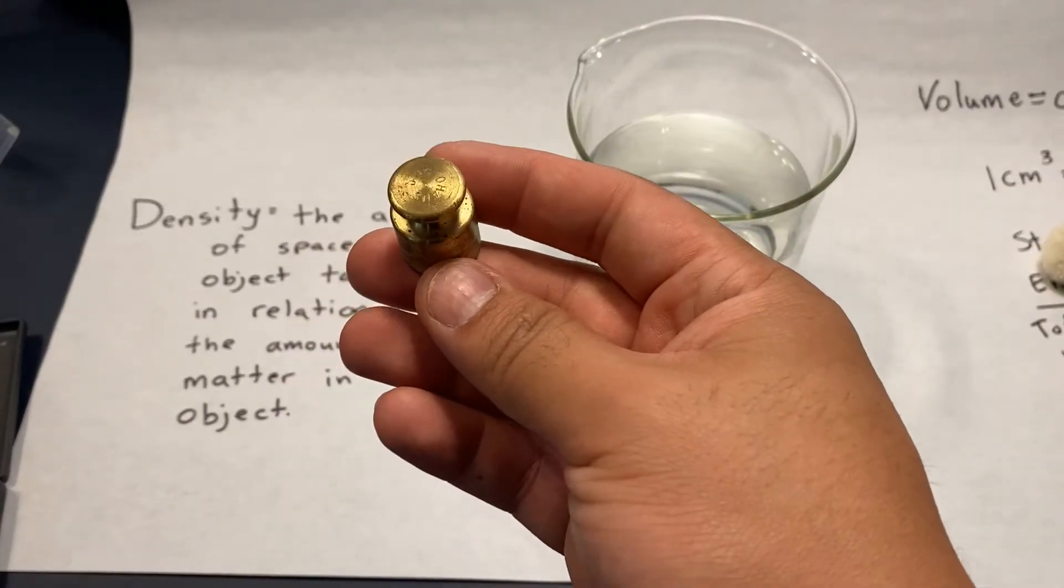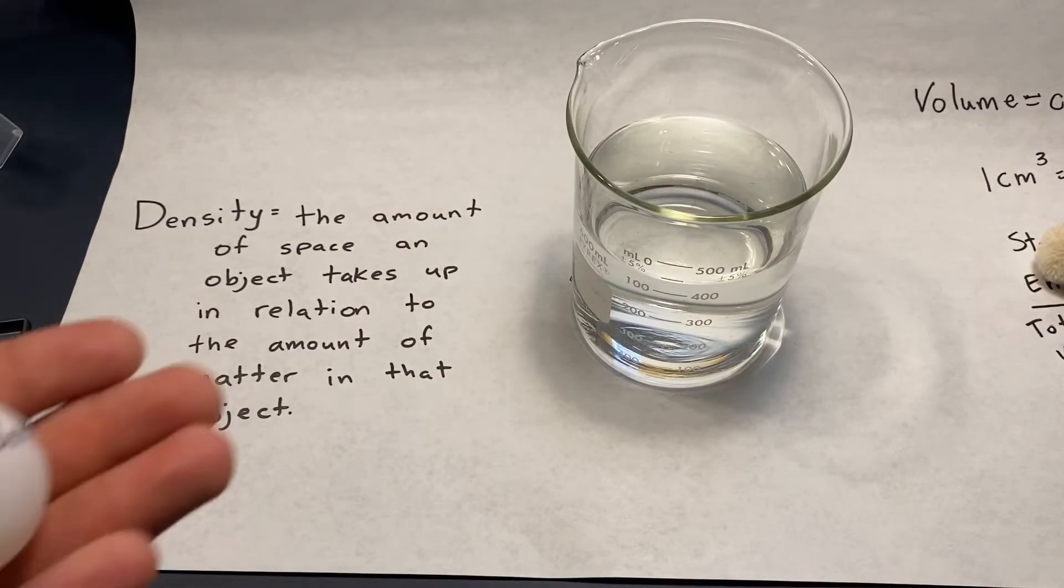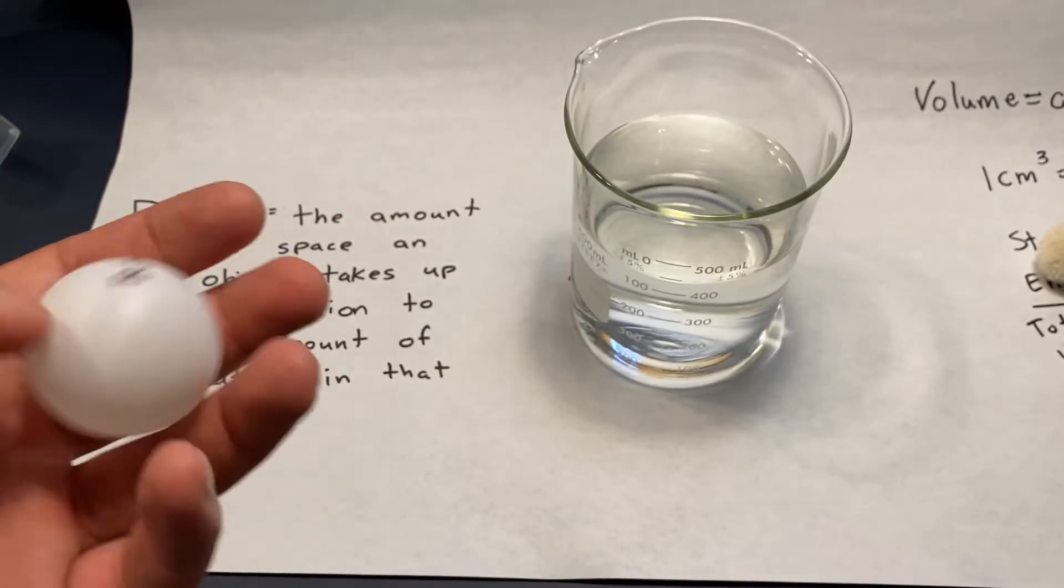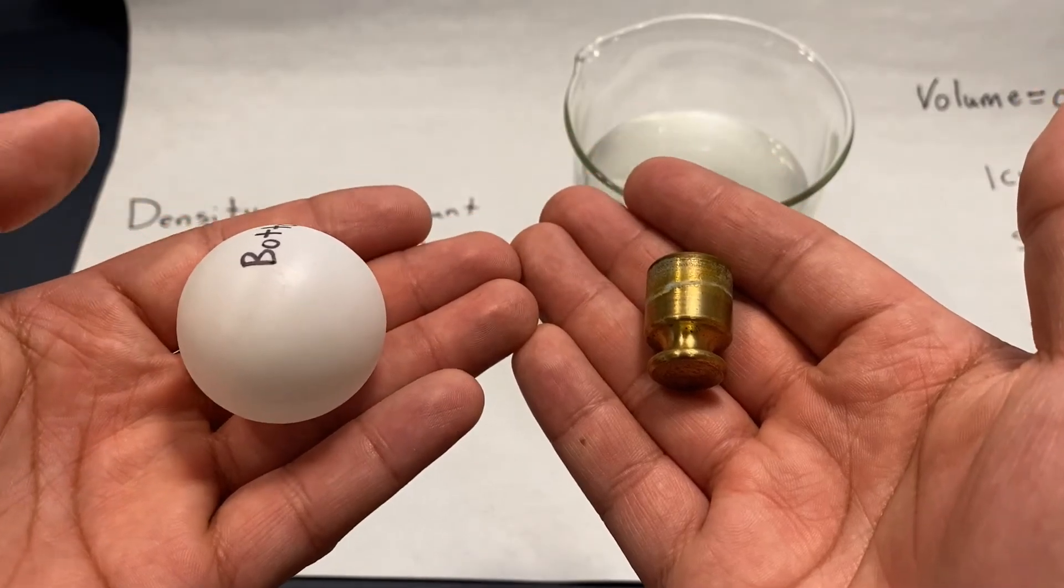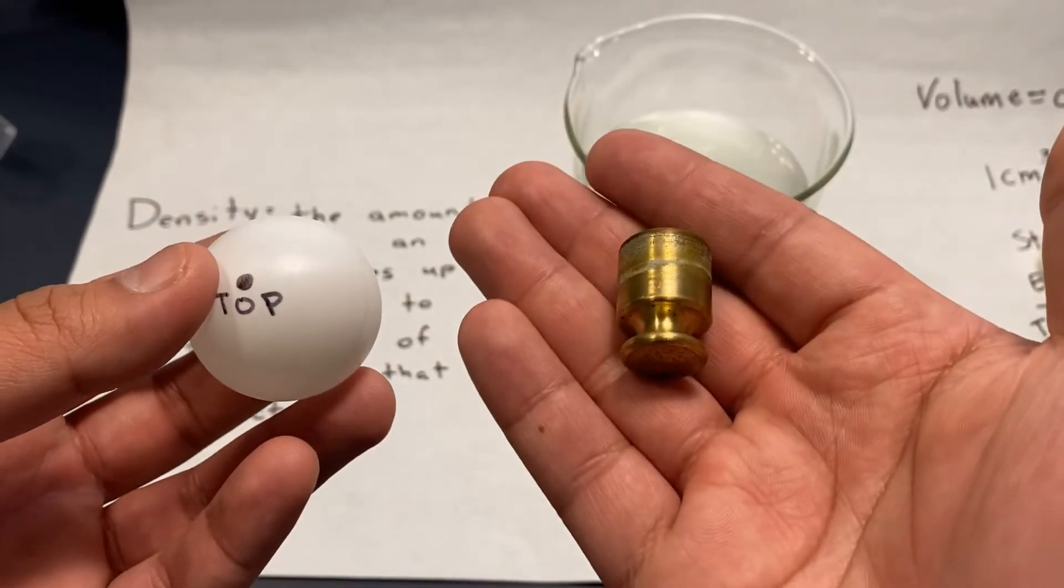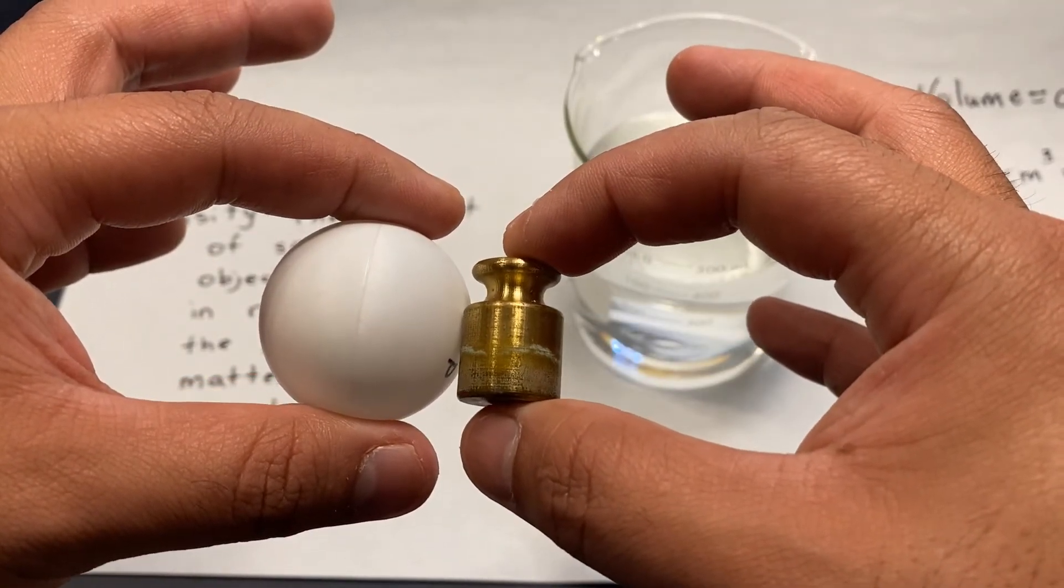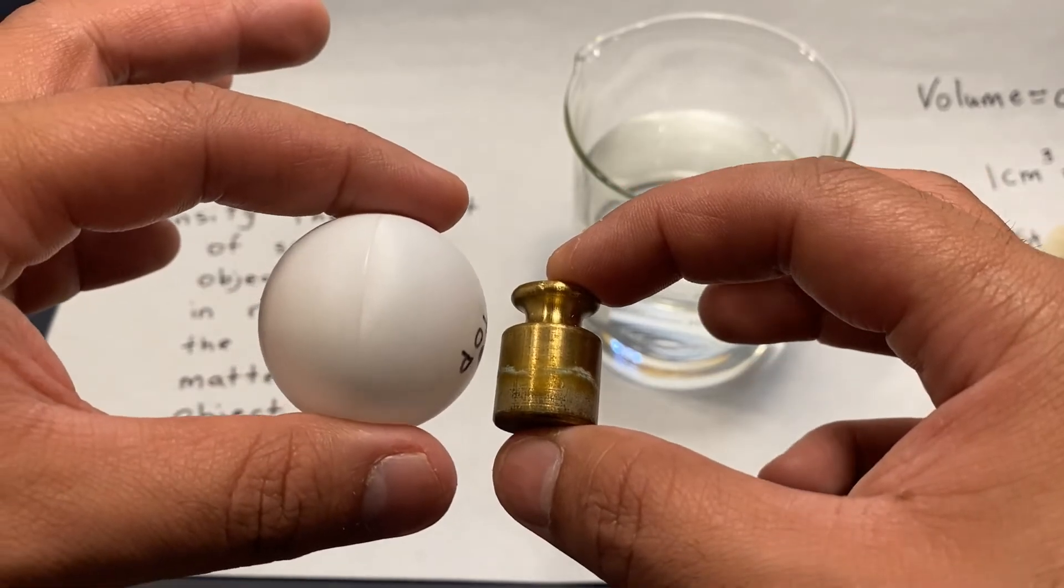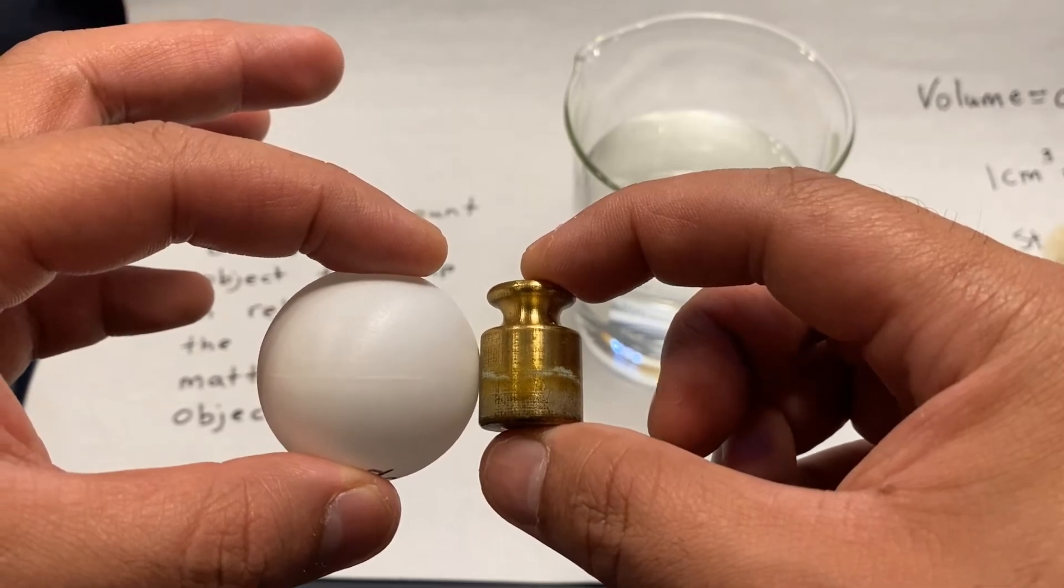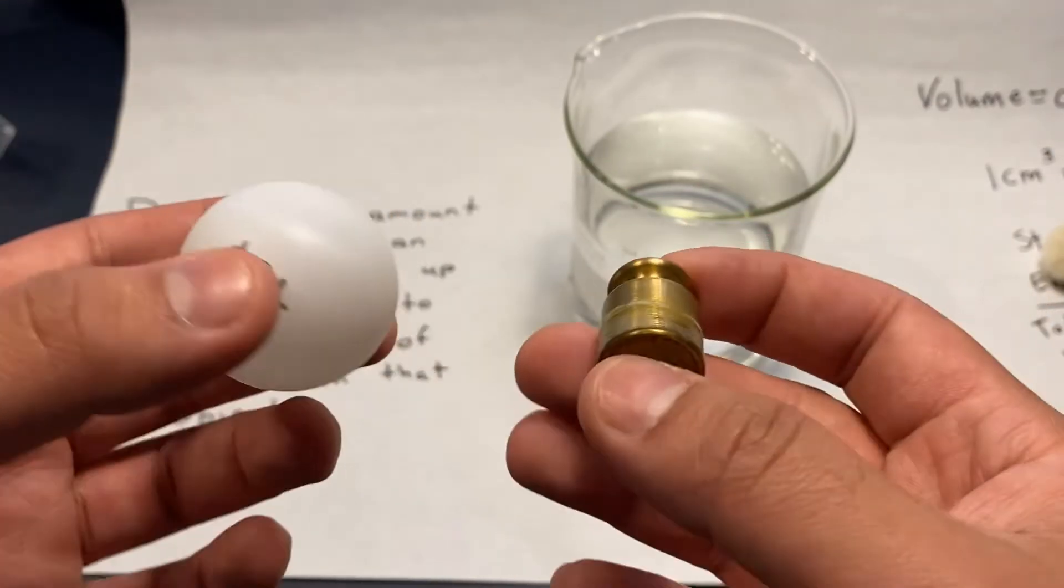So I have a weight that's 50 grams, this is the size, and then I also have a ping pong ball. It's much bigger than the weight. Now depending on density, which one is more dense? The weight is going to be more dense. Which one's bigger? The ping pong ball. Now just because the ping pong ball is bigger doesn't mean it's going to weigh more. It all depends on how much mass is inside that object.